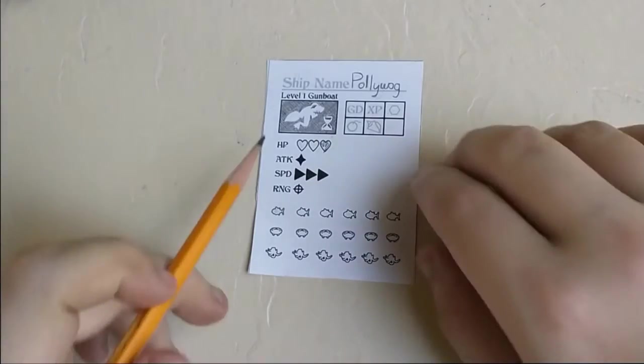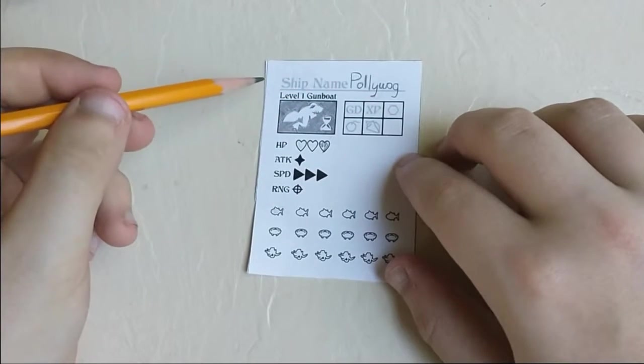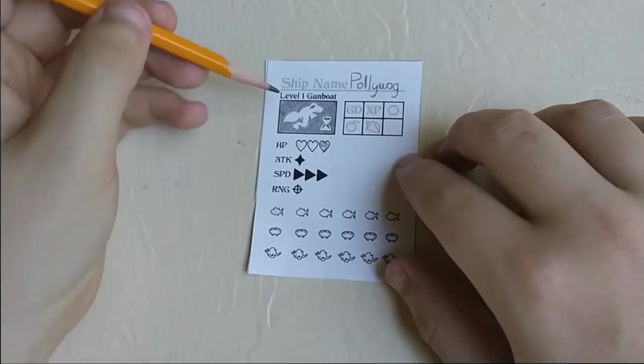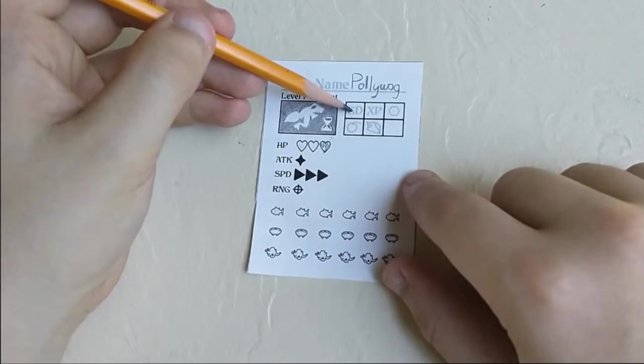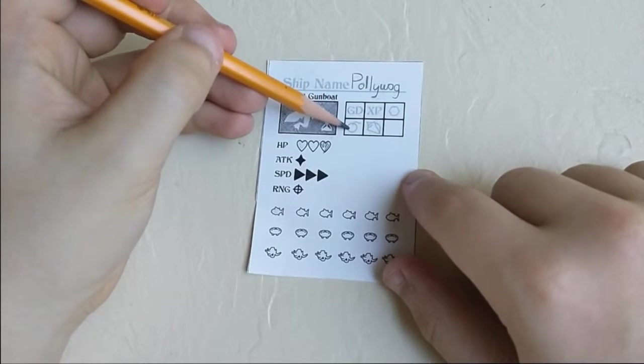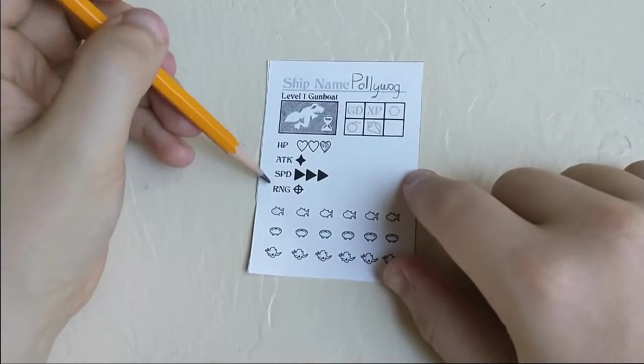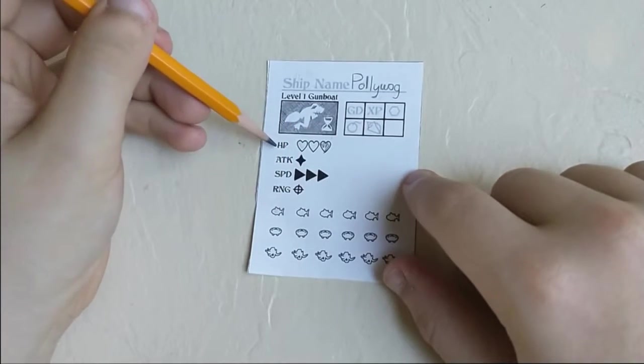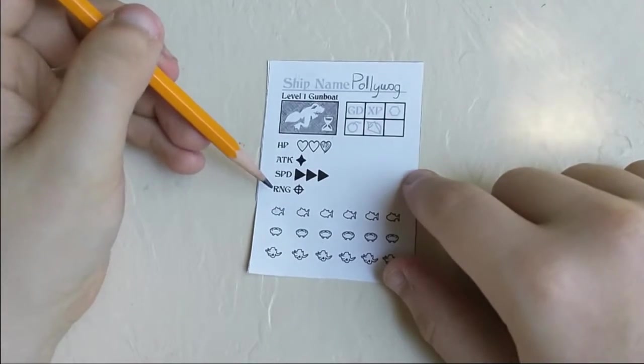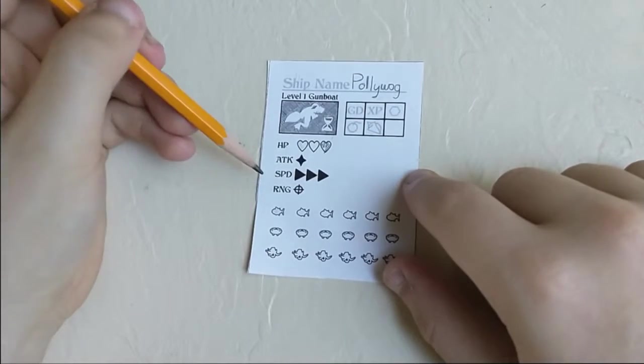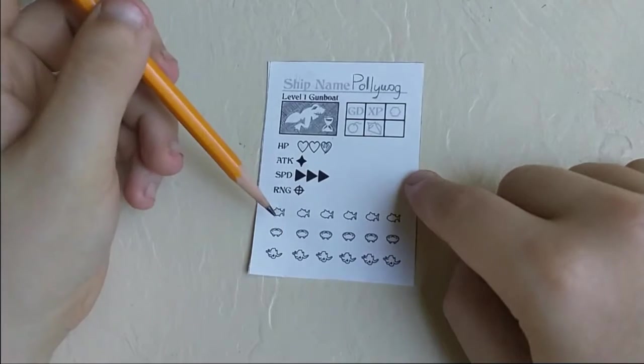Let's look at the parts of this card. Here we have a line to put the name of your ship on. My ship is called the Poliwog. Then we have the label of what kind of ship this is. This is a level 1 gunboat. Then we have a box to draw your flag. Then we have 5 boxes here to list how many gold pieces, experience points, ammunition, bombs, and conch shells you have, plus an extra box for whatever you like. Then there are 4 statistics that describe your ship: HP, which stands for health points; ATK, which stands for attack; SPD, which stands for speed; and RNG, which in this case does not mean random number generator, but means range. Then there are 6 fish, 6 crabs, and 6 octopodes, and we'll get into what those mean later.